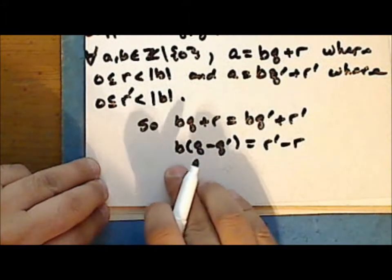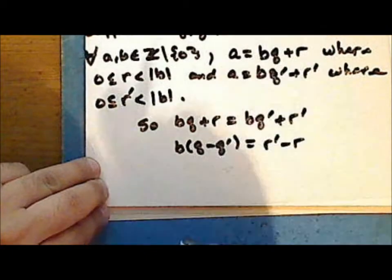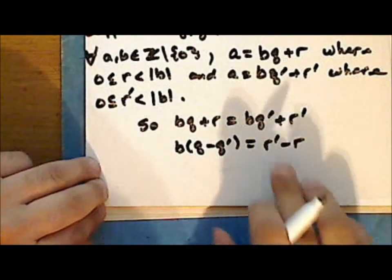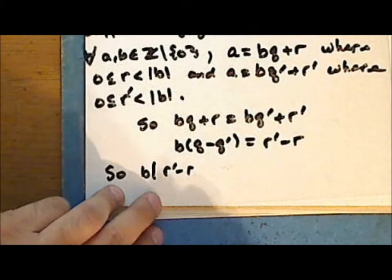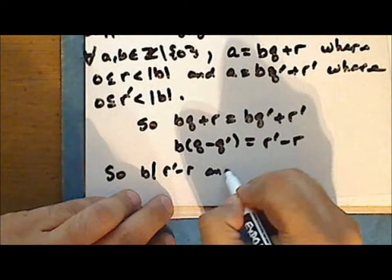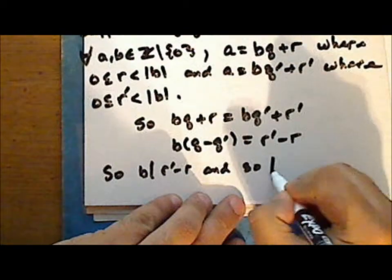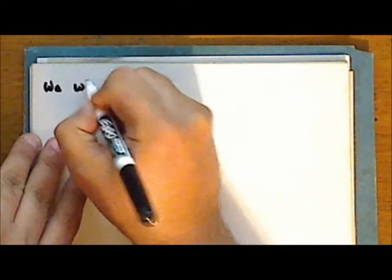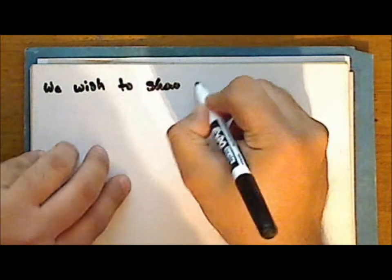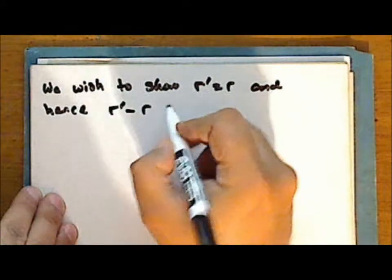Notice that b is an integer multiple of r prime minus r, so b must divide the difference r prime minus r. And if b divides this integer, then the absolute value of b divides this integer. We need to show that r prime equals r, and hence r prime minus r equals zero.